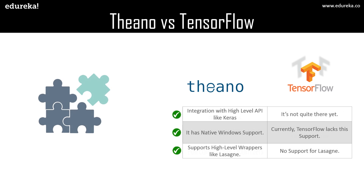Talking about compatibility, Keras — an amazing deep learning library — is compatible with Theano and integrates well. But in the case of TensorFlow it's not quite there yet. However, in version 2.0 this won't be the case, as they just released the 2.0 alpha version, and one of the key features of TensorFlow 2.0 is its extensive use of Keras. Theano also has native Windows support, whereas TensorFlow currently does not. Theano also supports high-level wrappers like Lasagne, but for TensorFlow there's no such support.